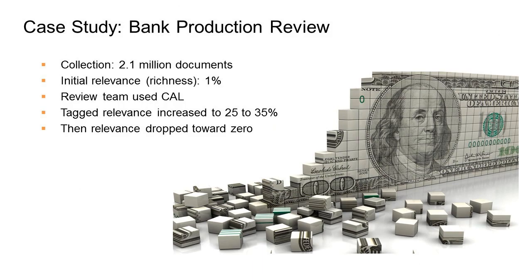Why does this matter? I'm going to take 30 seconds to talk about why it matters. We were working with a client, a large bank. They had 2.1 million documents, which they'd already culled and searched, and yet they hadn't got the population any smaller, and they needed to do a review. A sample of those documents showed that really only 1 in 100, despite their culling, was relevant. Now, if David Stanton's doing this, it's more like 50 of 100, but not everybody's got those skills.